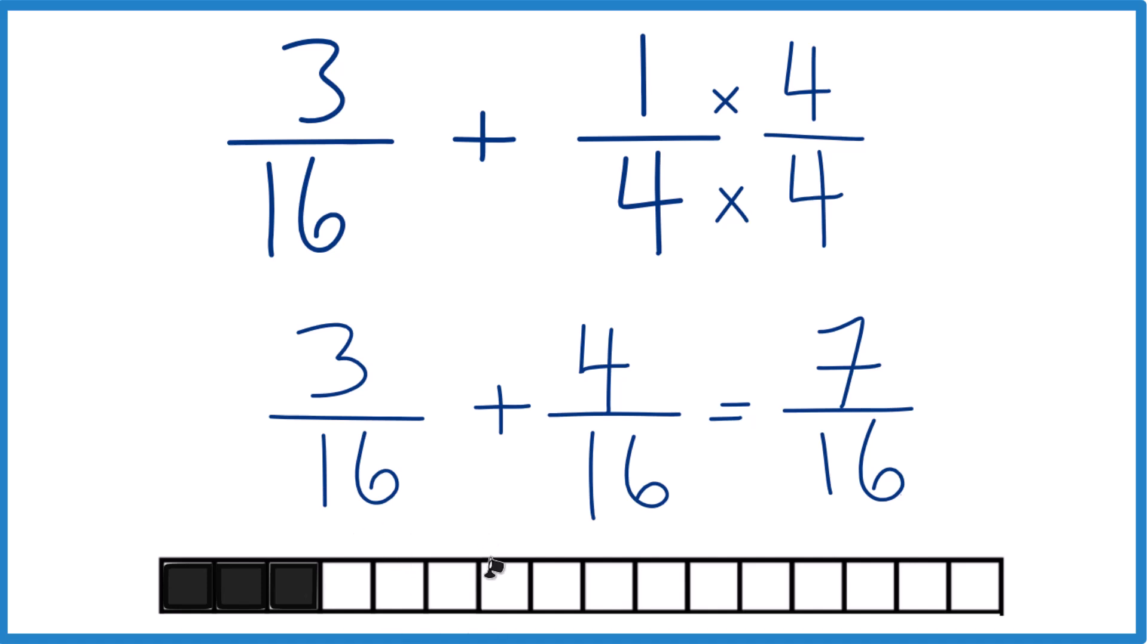And since each one of these is 1/16, now we can just take 4/16. 1, 2, 3, 4. So now we have 7 out of 16 pieces. So the 16th stays the same. We have 16 pieces. It's the 7 pieces that changes.